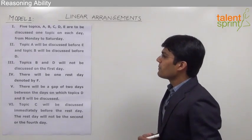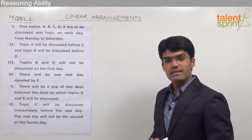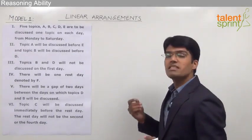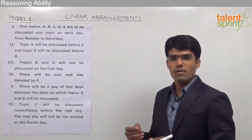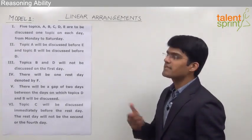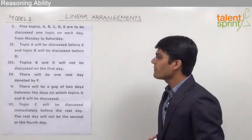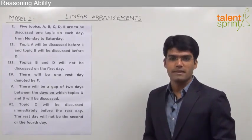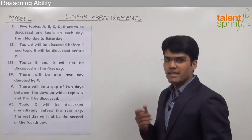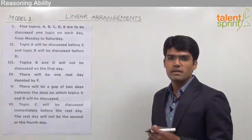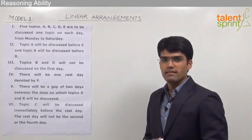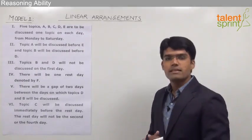The question here is: five topics A, B, C, D, E are to be discussed, one topic on each day from Monday to Saturday. We are supposed to arrange these five topics from Monday to Saturday. Topic A will be discussed before E, and topic B will be discussed before D. Topics B and D will not be discussed on the first day. There will be one rest day denoted by F, giving us six topics overall and six days from Monday to Saturday.